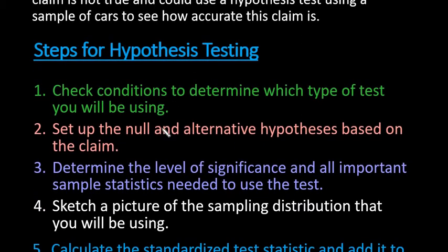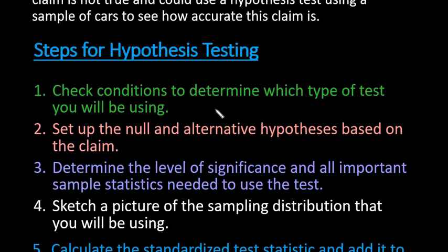When doing a hypothesis test, your first step is to check your conditions for the test that you are planning on using. If you're doing a test for the mean, you would have either a z-test or a t-test. If you're doing a test for a proportion, you would do a one proportion z-test. If you're testing the difference between two means, then you would do a two sample z-test or a two sample t-test. There are a lot of different tests out there, and for every single one there are conditions that allow you to use that specific test. So you always want to check your conditions and figure out what information you have and what type of test you will be using.